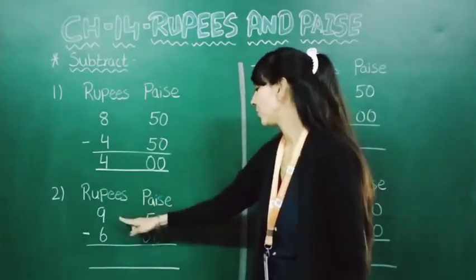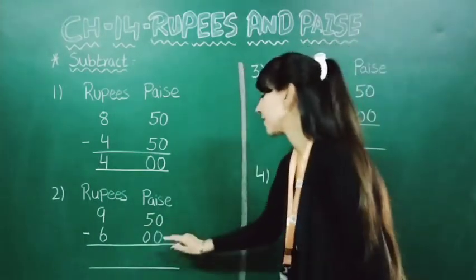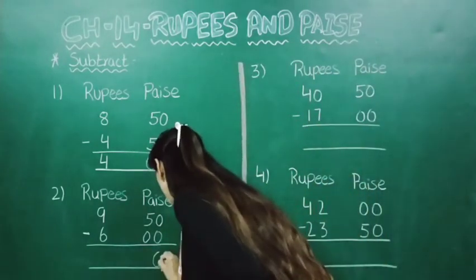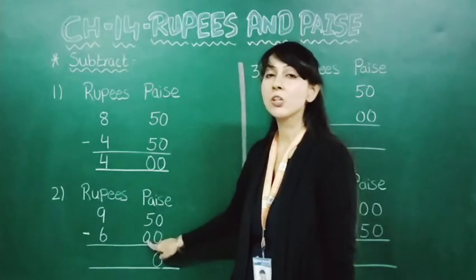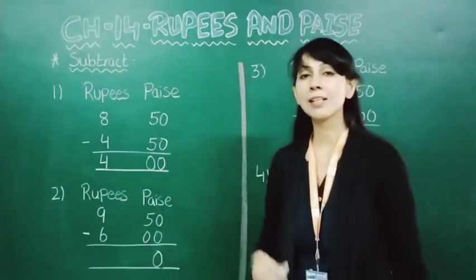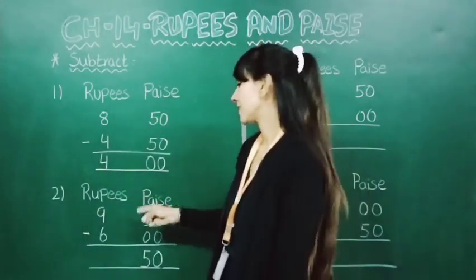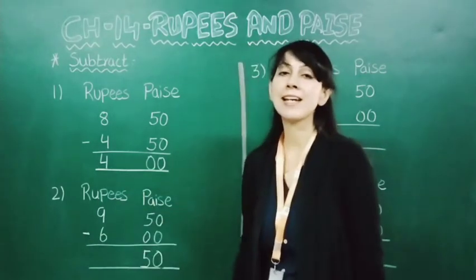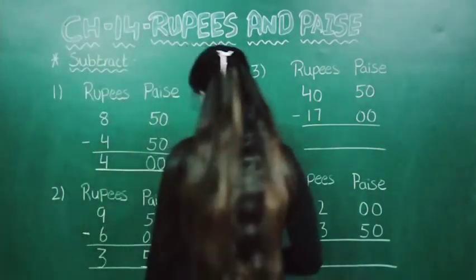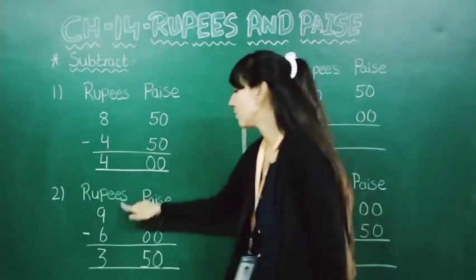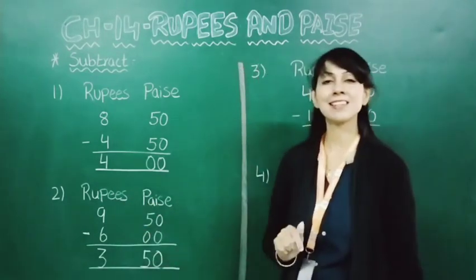Now let's see another one: 9 rupees 50 paise minus 6 rupees. Here you can see 2 zeros, so here also we will just put 0. Here 5 is written and down you can see 0 is written, so here it will come 5 only. Now in rupees, 9 minus 6 — you will get 3. So the answer is 3 rupees 50 paise.